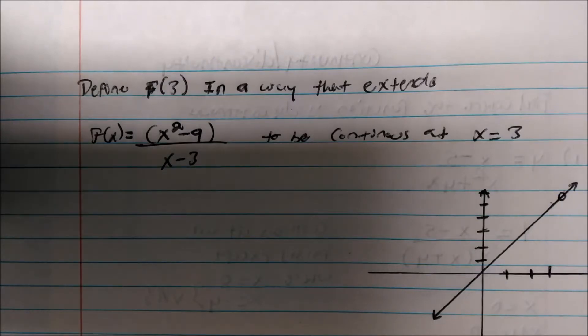So continuous extension at a point, how to make a function continuous. Immediately when I see these type of problems I think of piecewise and how can I define this in a way to make it make sense.